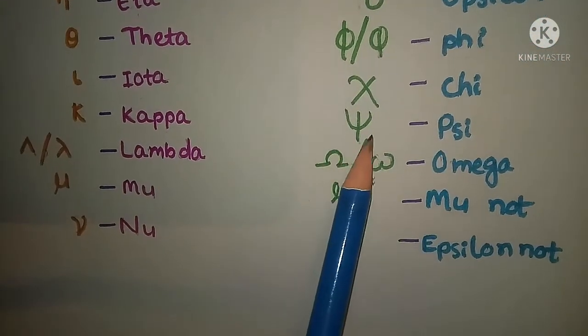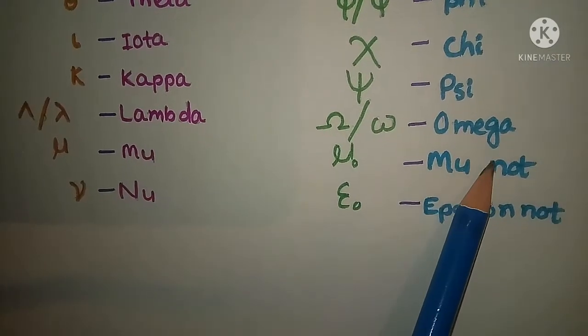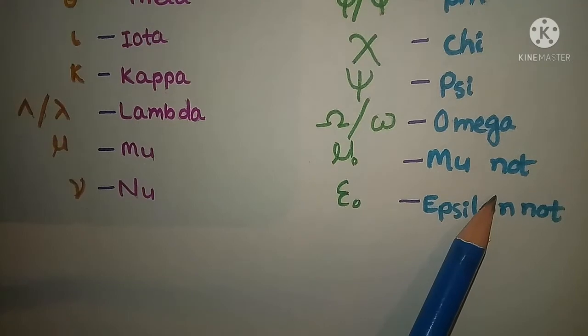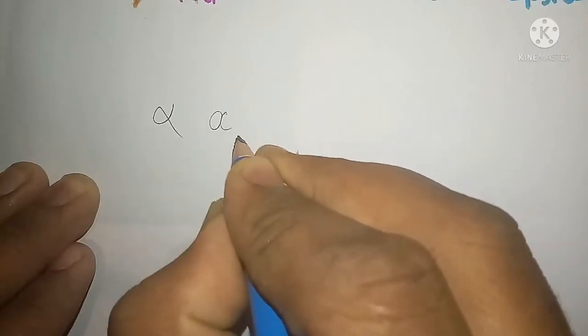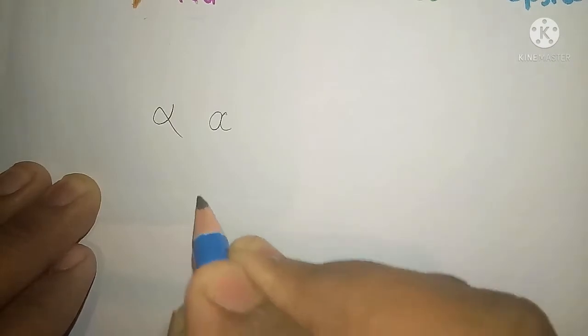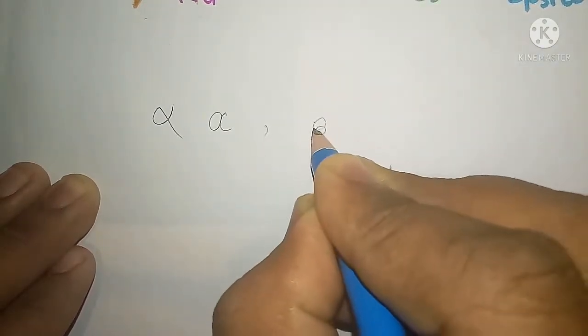Chi, psi, omega, mu naught, epsilon naught, alpha, beta.